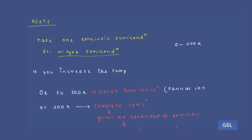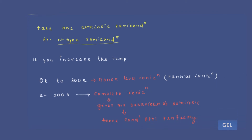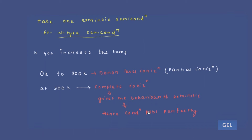Partial ionization starts at 0K and at 300K we get complete ionization. After complete ionization, considering the entire semiconductor, at 300K when complete ionization happens, this gives the behavior of an extrinsic semiconductor — conduction is possible through free electrons in the conduction band.